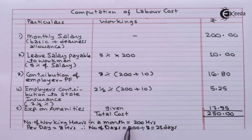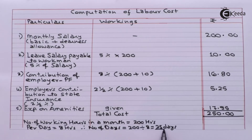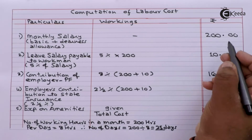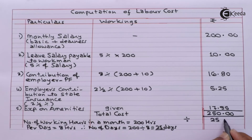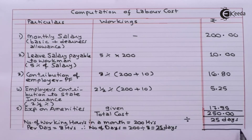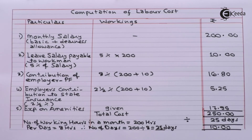Number of working hours in a month is given as 200 hours. Per day is eight hours, so we can calculate total number of days: 200 hours divided by 8 hours comes to 25 days. Total cost is 250 rupees, and we want to calculate cost per day. There are 25 days in a month and monthly cost is 250, so 250 divided by 25 days is rupees 10 per day.